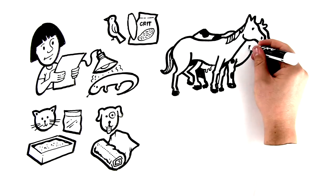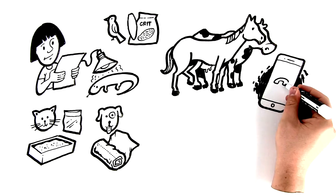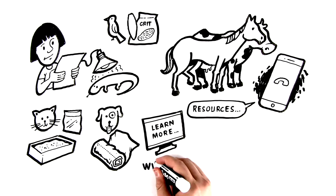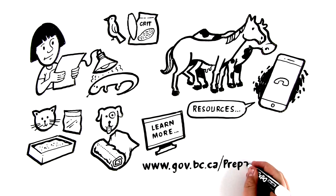For large animals such as horses or cows, talk to local authorities to find out what plans are in place and what resources are available. Learn more at www.gov.bc.ca/preparedbc/pets.